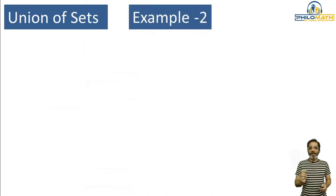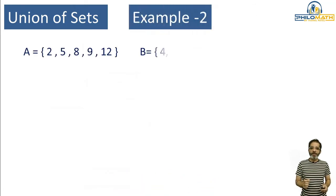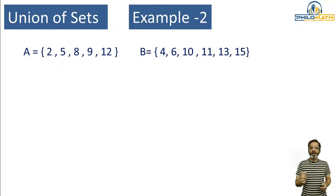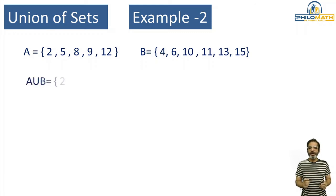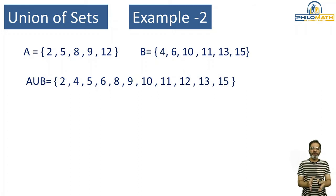Let's take the second example. Again I'm taking two sets A and B. Set A has 2, 5, 8, 9, and 12, and Set B has 4, 6, 10, 11, 13, and 15. If you see the two sets carefully, in these two sets there is no element in common — we don't have any common numbers. So when I write down A union B, I'm going to write down all elements from A and all elements of B, and since there is no repetition, we write down all elements.